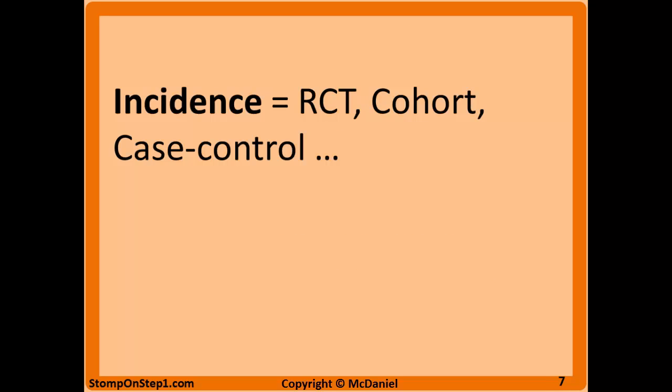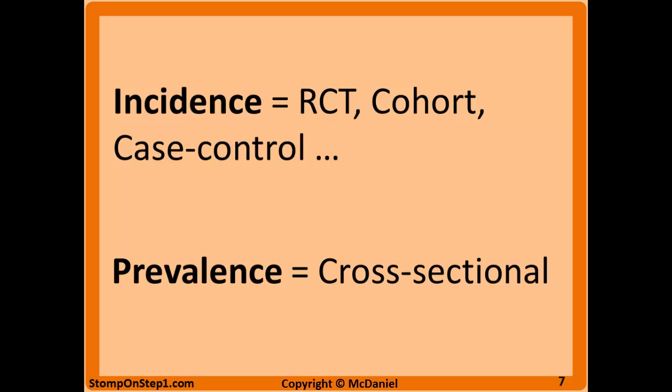Incidence is used for most study designs you'll study for Step 1 — randomized control trials, cohort studies, and case control. Incidence has higher validity when you're trying to associate two things, because if you want to show that a new drug leads to better health outcomes, you really need to measure people over time. Prevalence is used in cross-sectional studies, and if you're trying to find a causal link between two things, cross-sectional studies have much lower validity because you're not measuring people over time. For example, you can't link smoking to a disease with prevalence alone, because you can't determine causality without tracking things over time.